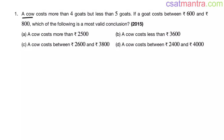A cow costs more than 4 goats but less than 5 goats. If a goat costs between 600 rupees and 800 rupees, which of the following is the most valid conclusion?